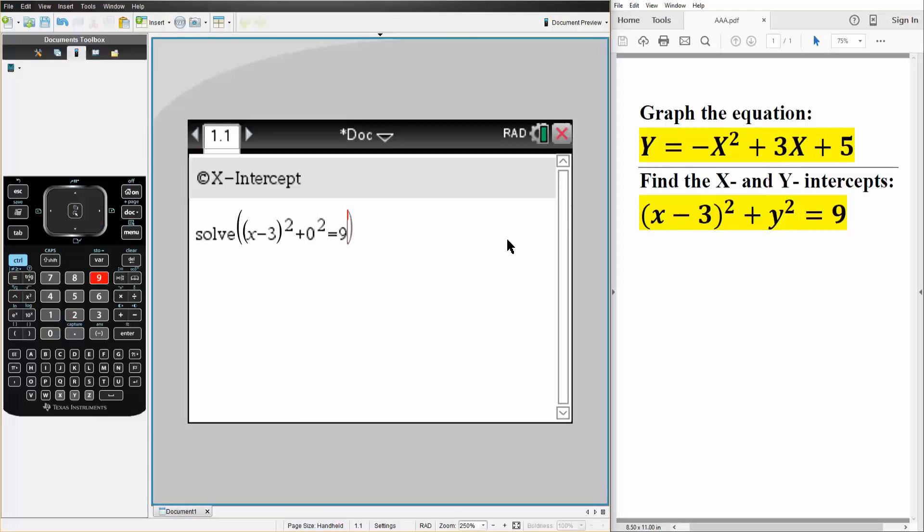And we want to get the x intercept, so we say comma x. And so our x intercept would be x is equal to zero or x is equal to six. So this was the x intercept.